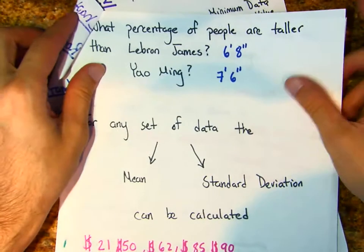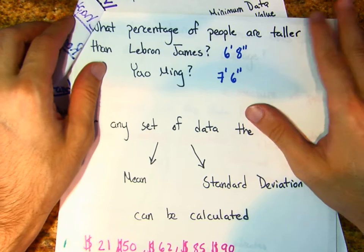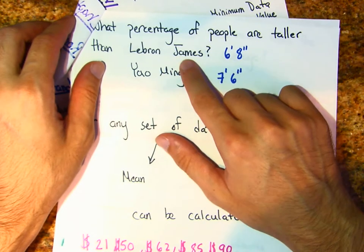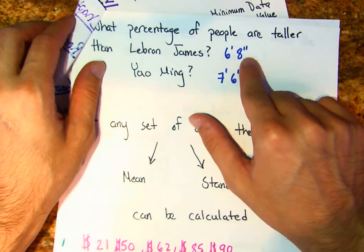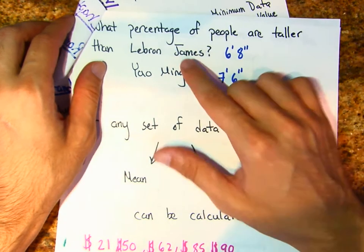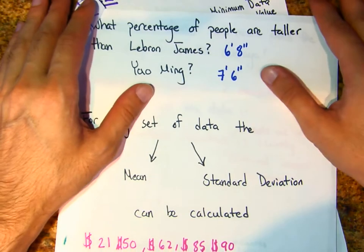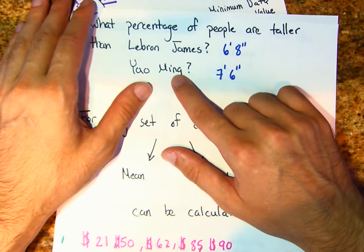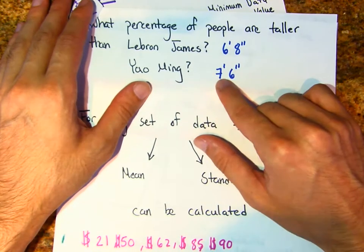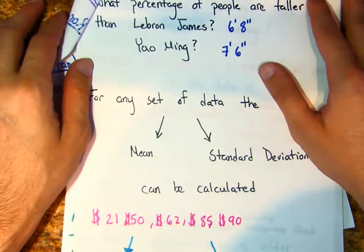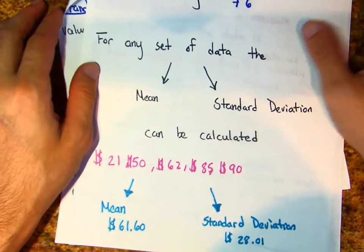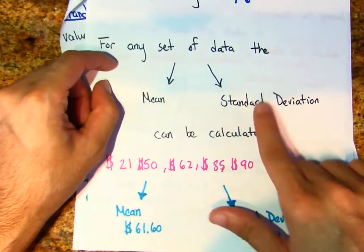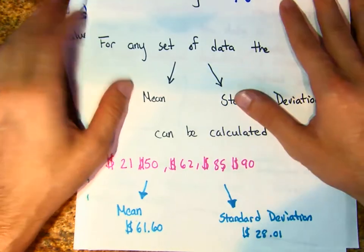Here's the question I'll ask: what percentage of people are taller than LeBron James, who is six foot eight inches tall? And of all the people in the whole world, how many people are taller than Yao Ming — the Chinese basketball player who was seven foot six inches? For any set of data values, a mean and standard deviation can be calculated.